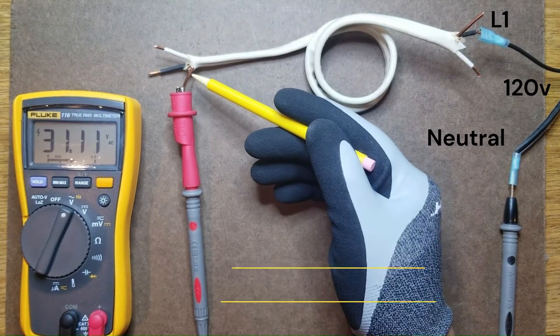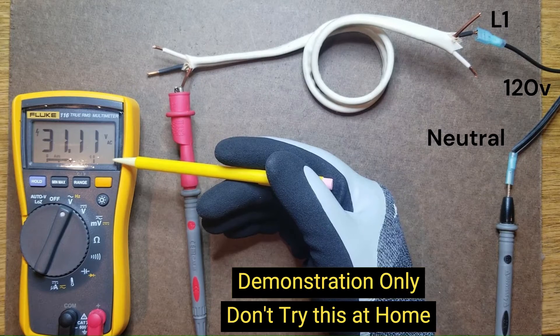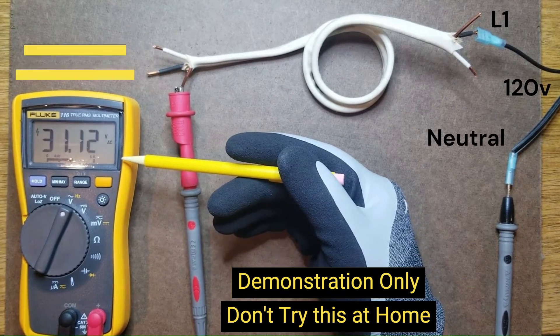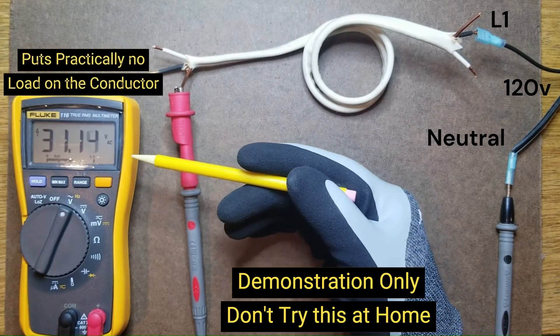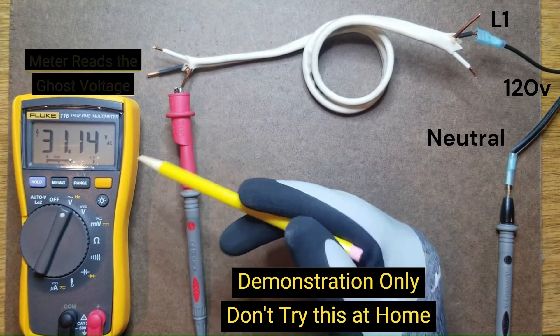This voltage has almost no ability to provide any current. However, when this meter is in regular voltage reading mode, its greater than 5 million ohm input resistance puts practically no load on the wire and thus reads the ghost voltage.